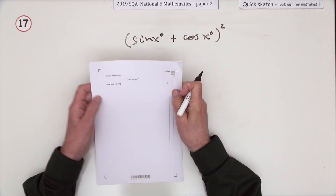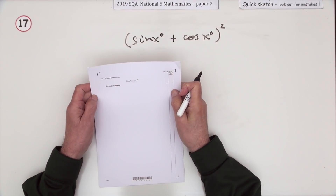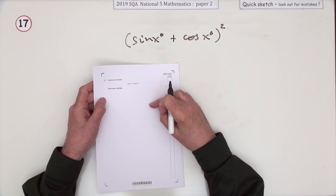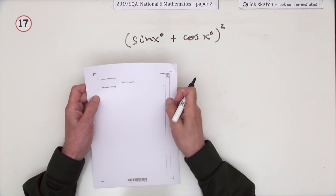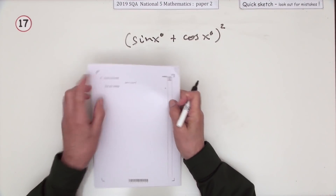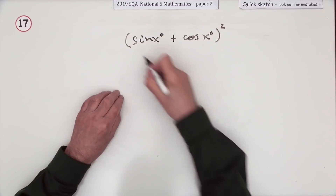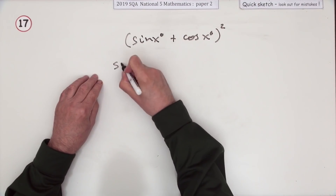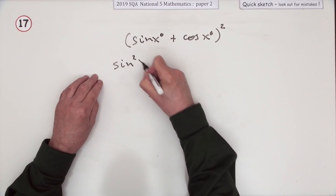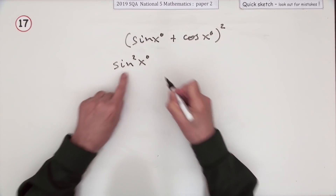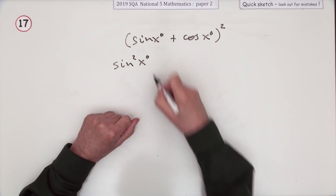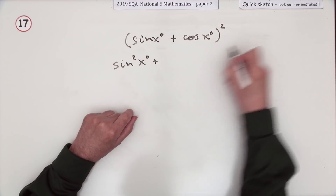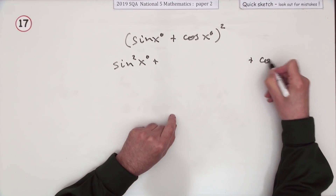Number 17 from paper 2 of the 2019 National 5 trig identities question — it just says expand and simplify. Expanding: square the first, so that's sine squared. The way you write that is sine squared x — it's sine times sine. Square the last, so that will be cos squared x.